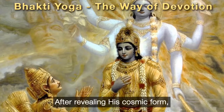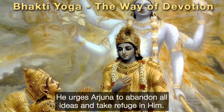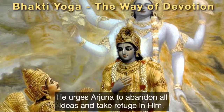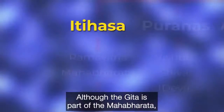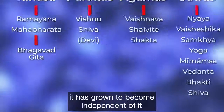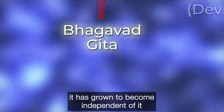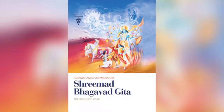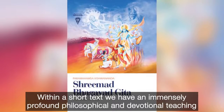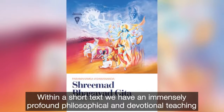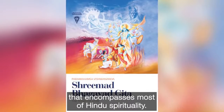After revealing his cosmic form, he urges Arjuna to abandon all ideas and take refuge in him. Although the Gita is part of the Mahabharata, it has grown to become independent of it, and in many ways it is the flagship scripture of Hinduism. Within a short text we have an immensely profound philosophical and devotional teaching that encompasses most of Hindu spirituality.